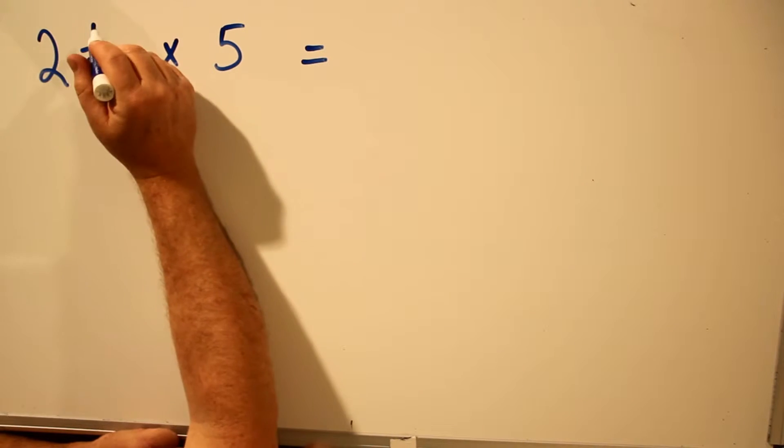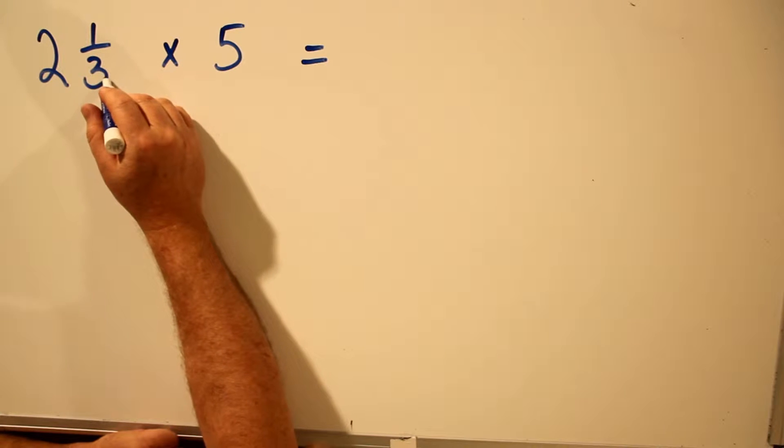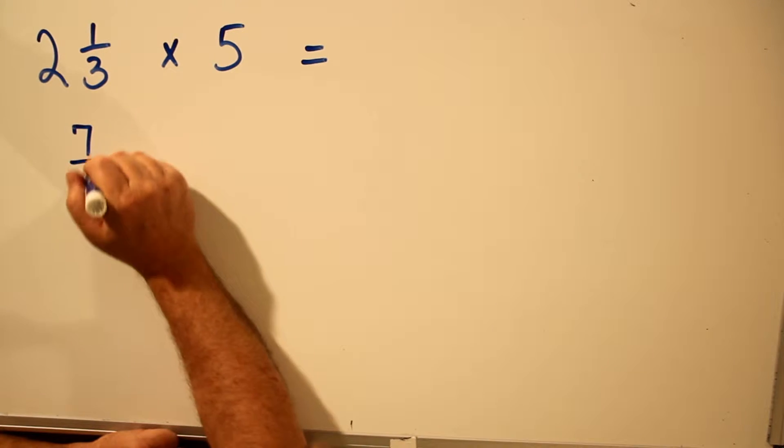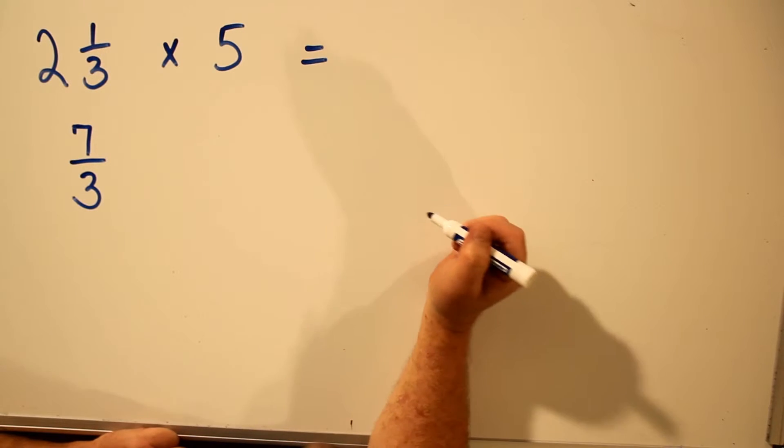To convert 2 and 1/3 to an improper fraction, you multiply 2 times 3, which is 6, add the 1, the top number becomes 7, and the bottom number stays the same.